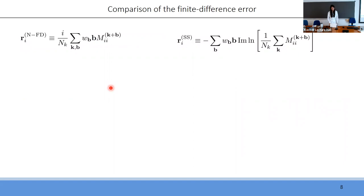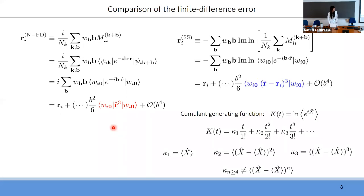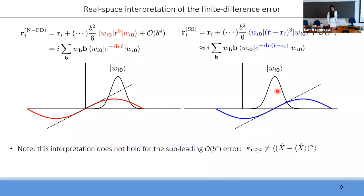To analyze the finite difference error, for the naive formula one can show it is equivalent to the expectation value of an exponential operator. From a Taylor expansion, the leading error is the third-order moment of the position operator. For the Stengel-Spalding formula, it is equivalent to the cumulant generating function — the logarithm of the expectation value of that exponential operator. The cumulant generating function tells us the leading error is the third-order central moment, where the Wannier center is subtracted from the position operator.